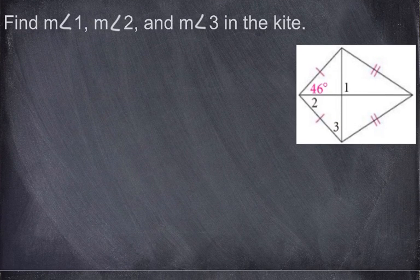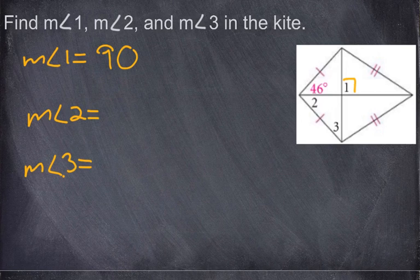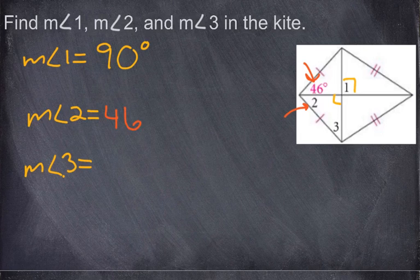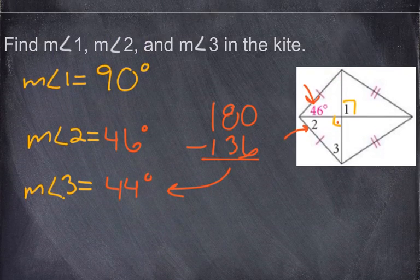Same approach for the next example — find angles 1, 2, and 3. Always identify the 90-degree angle first where the diagonals intersect — all four intersection angles are 90 degrees. Since one given angle is 46 degrees, angle 2 is also 46 degrees by the bisecting property. Then 46 plus 46 plus 90 equals 136, and 180 minus 136 gives angle 3 equals 44 degrees. That's how we apply these problems with the kite.